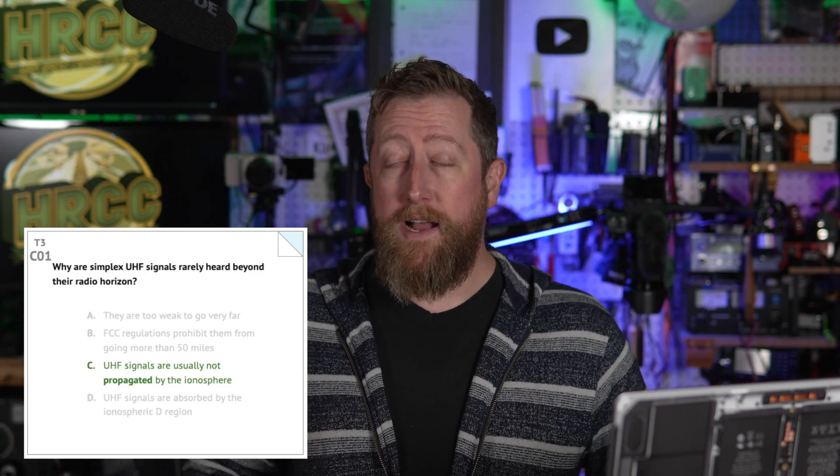Section Charlie within sub-element three covers propagation modes: sporadic E, meteor scatter, auroral propagation, tropospheric ducting, F region skip, and line-of-sight radio horizon. Charlie 01: Why are simplex UHF signals rarely heard beyond the radio horizon? The answer is C: UHF signals are usually not propagated by the ionosphere. Two meters will sometimes get into sporadic E and tropospheric ducting, where UHF generally does not — so you'll rarely achieve more than line-of-sight communication with UHF.